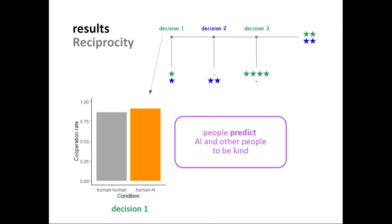The results: when the green player starts the game, the cooperation rate — the decision to continue — is very high irrespective of whether they play with a human or an AI agent. The majority of people cooperate, which also shows that they predict their partner to cooperate with them — in other words, they predict their partner to be kind toward them later.